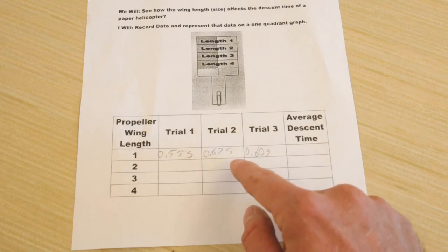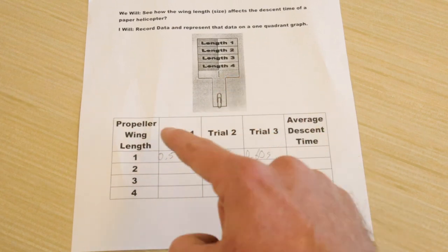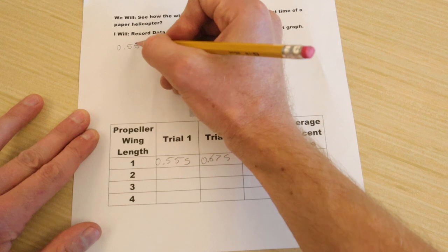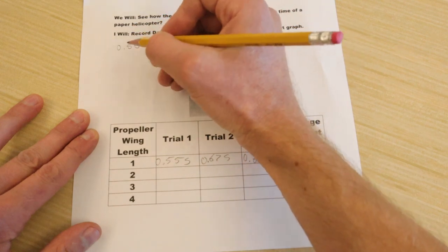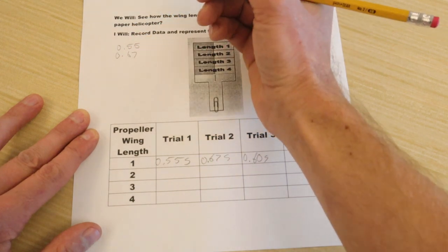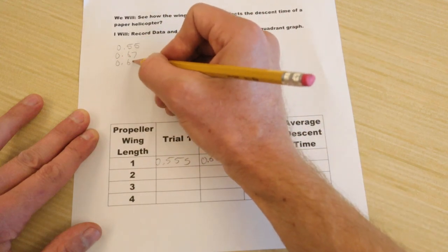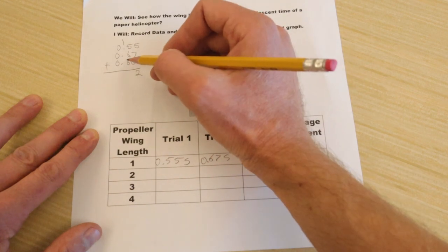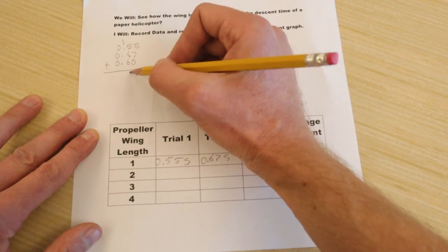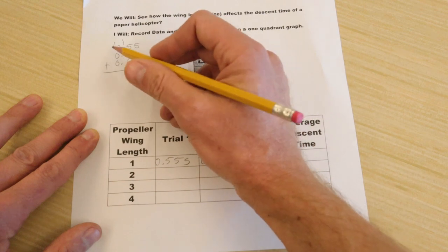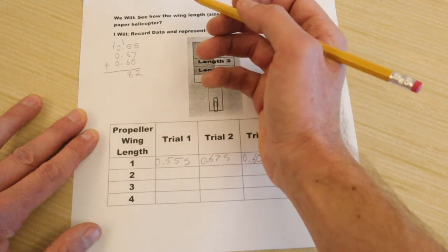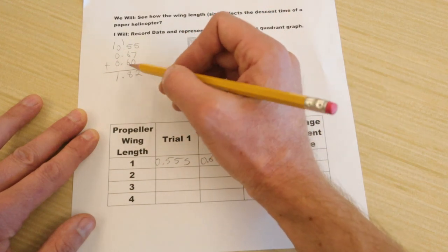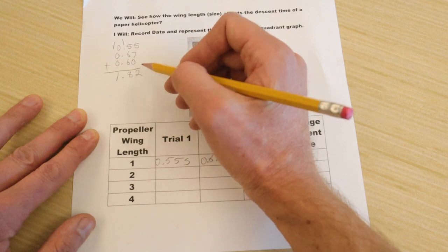I'm going to add these together and divide by three because we have three different tests. And then that'll get me my average descent time. So I'll use some space up here to start doing my math. 0.55 plus 0.67 plus 0.60. Add that up. 5 plus 7 plus 0, that gives me 12. 6 plus 6 plus 5 gives me 17 plus 1 is 18. So I add my 8 here, carry my 1. 0 plus 0 plus 0 is obviously 0 plus 1 gives me 1. Then I'm just going to drop down the decimal. So all together, it's about 1.82 seconds.